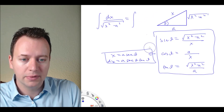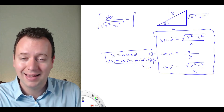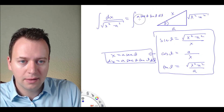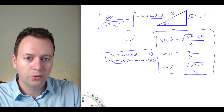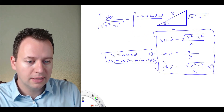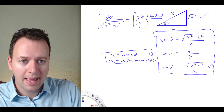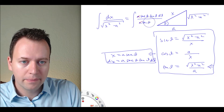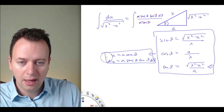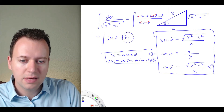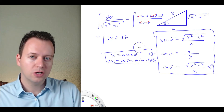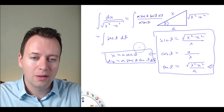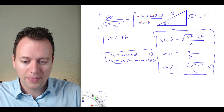Now I have to re-express this integral entirely in terms of theta. dx is replaced with a secant theta tangent theta dθ, divided by the square root of x squared minus a squared, which equals a times tangent of theta. So we divide by a tangent theta. The a's cancel and the tangent thetas cancel, so this integral becomes the integral of secant theta dθ. That looks nice and simple, except what is the antiderivative of secant theta?